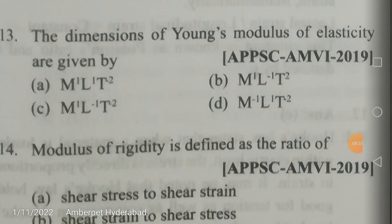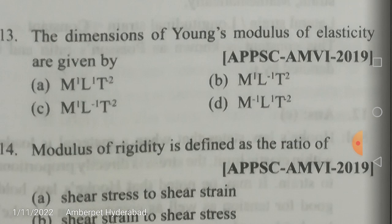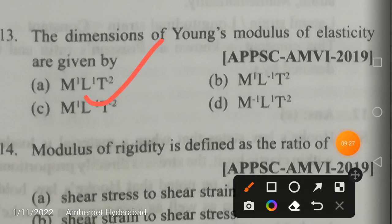The dimensions of Young's modulus of elasticity: Young's modulus equals stress divided by strain. Strain is dimensionless. Stress = force/area. Force = mass × acceleration, with dimensions MLT⁻². Area has dimensions L². Therefore Young's modulus has dimensions ML⁻¹T⁻². The correct answer is ML⁻¹T⁻².